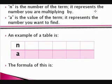The first two things that you need to know are that A is the value of term. It represents the number that you want to find, and N is the number of term. It represents the number you are multiplying. In other words, where the A is located, that is where your answer will be, and where the N is located, you will find whatever term you need.